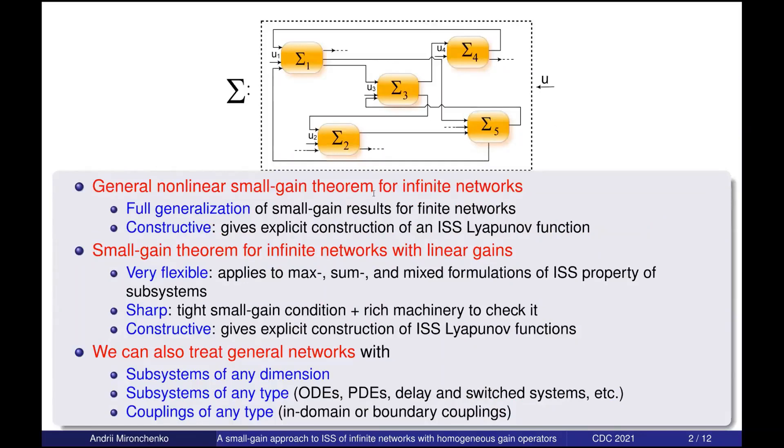The first tool is a general non-linear small gain theorem for infinite networks. In this setting we assume that all subsystems are non-linear and the interaction between them is non-linear as well. And we obtain a small gain condition which guarantees the stability of the network. How this works I have explained in my previous talk in this session.